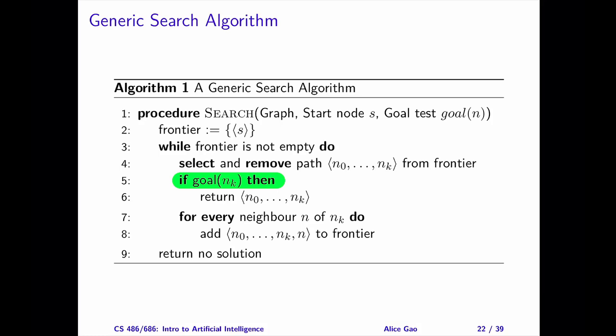Therefore, if we want to find the shortest path, we should wait after adding all possible paths to the frontier before selecting the best among them.